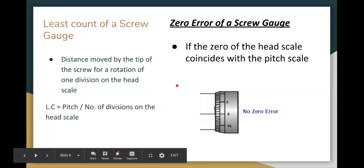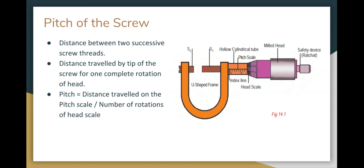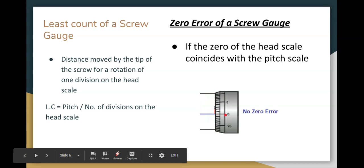Next, this is the zero error. Positive zero error and negative zero error. Positive zero error: if the pitch scale and the head scale do not coincide, this is zero error. You can see zero of the pitch scale and zero of the head scale. This is the zero error.